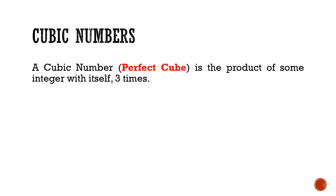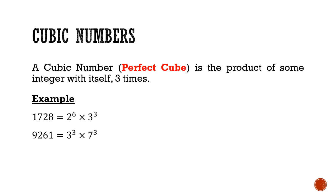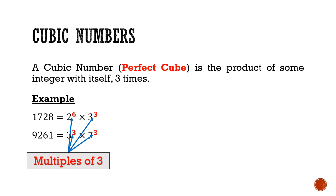Moving on to cubic numbers, also known as perfect cubes. These are numbers which are the product of some integer by itself 3 times. For example, 1728 and 9261 are cubic numbers. An interesting fact is that if you prime factorize them, you'll notice that the indices of each prime factor are multiples of 3.